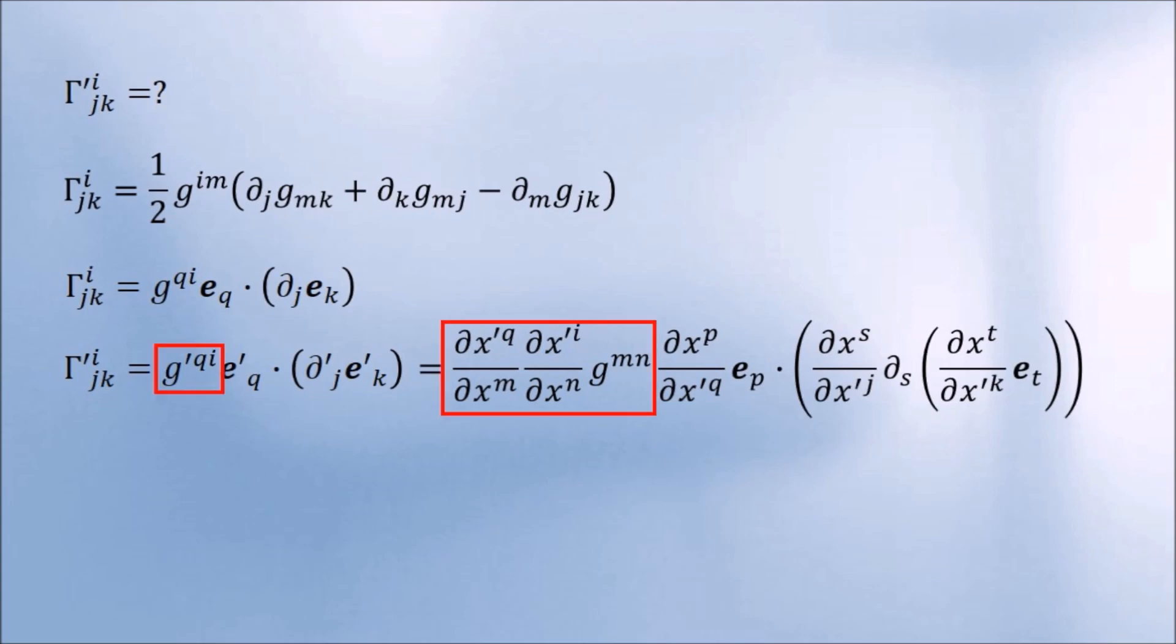We know that the Christoffel symbol can be written in terms of the metric like this. And since we know how the metric transforms, we can use this formula to work out how the gammas transform. But this would be too much messy work. There's a better way. You can check that the Christoffel symbol can also be written like this. And since we know how every object in this expression transforms, we can transform the whole thing. Here's the transformed metric, the basis, the derivative, and the basis again.